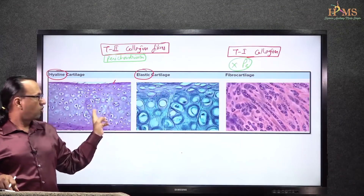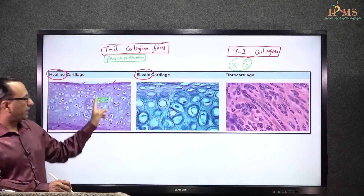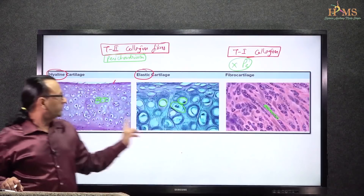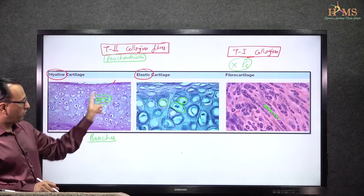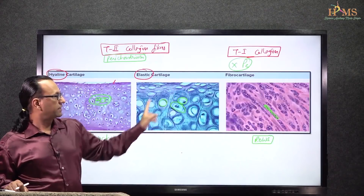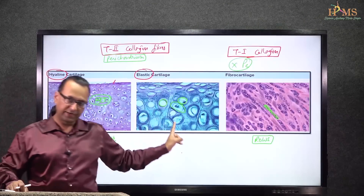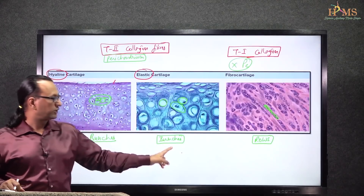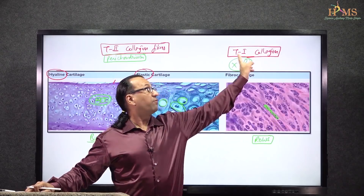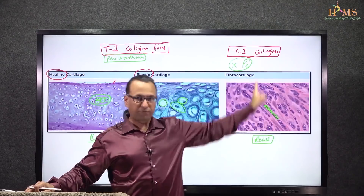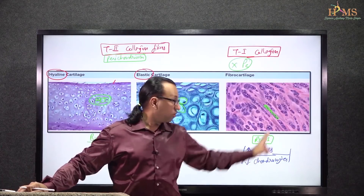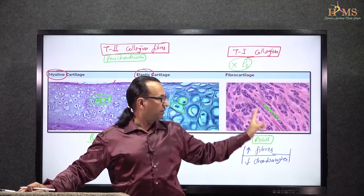All three types show chondrocytes scattered among fibers, and looking at the pattern of fibers you can decide which kind of cartilage it is. Bunches of chondrocytes favor hyaline cartilage, while rows of chondrocytes alternate with bands of type 1 collagen fibers in fibrocartilage. Fibrocartilage has more fibers and less chondrocytes, with chondrocytes running in rows, which you can identify here.